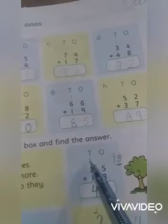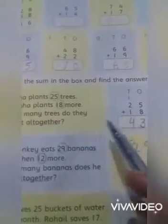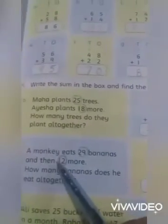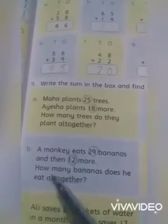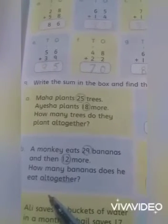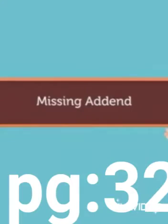Two plus one is equal to three, plus four — 43. Our total trees are 43. Okay students, take question number B and C — both of these are the same. Solve them by yourself.